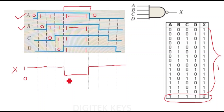I hope you understood how to solve the output waveforms for two-input, three-input, and four-input NAND gates. The truth table doesn't vary much for NAND gates with multiple inputs. For NOR gates, the truth table conclusion differs for different input counts — we will cover that in the next video. Thank you for watching. Please like, subscribe, and share the videos.